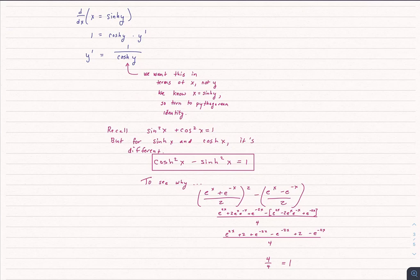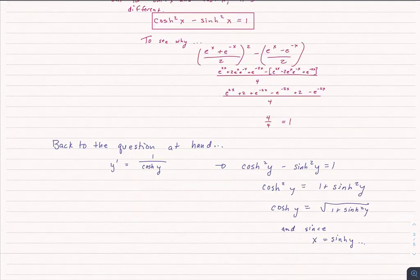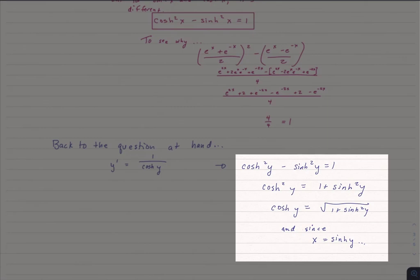So I rewrite that equation in terms of just cosh of y, and I get that cosh of y is equal to the square root of 1 plus sinh squared y.